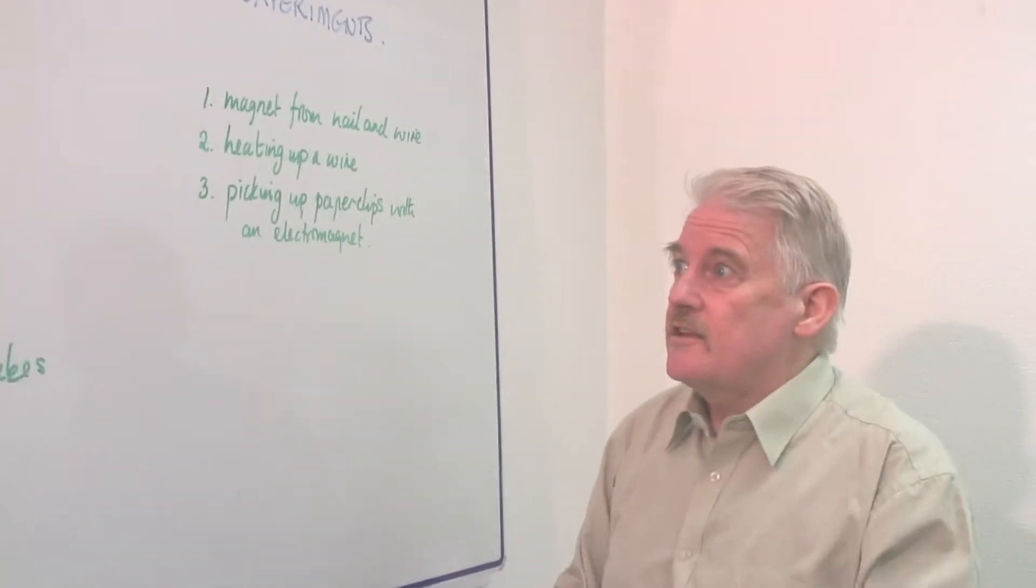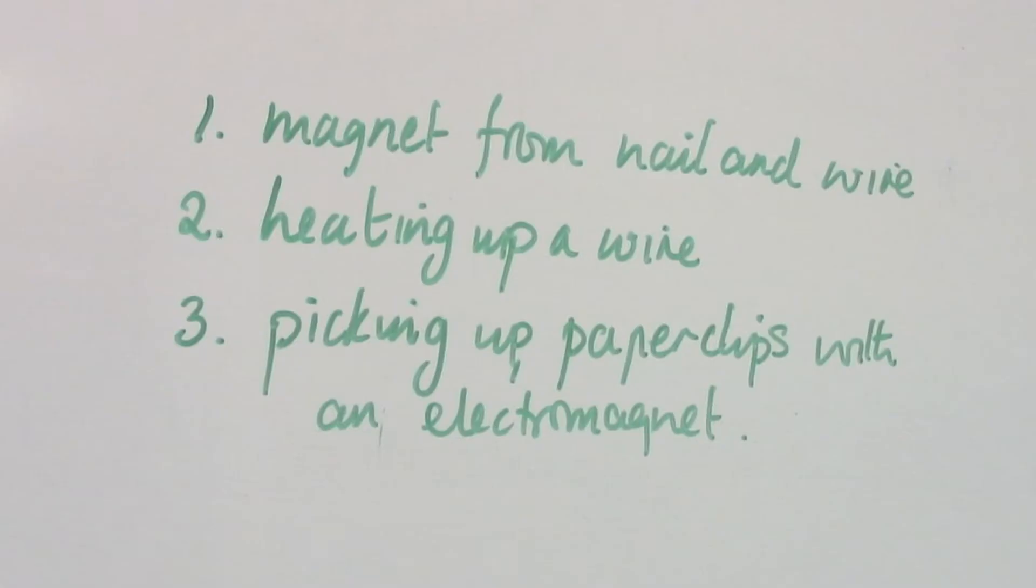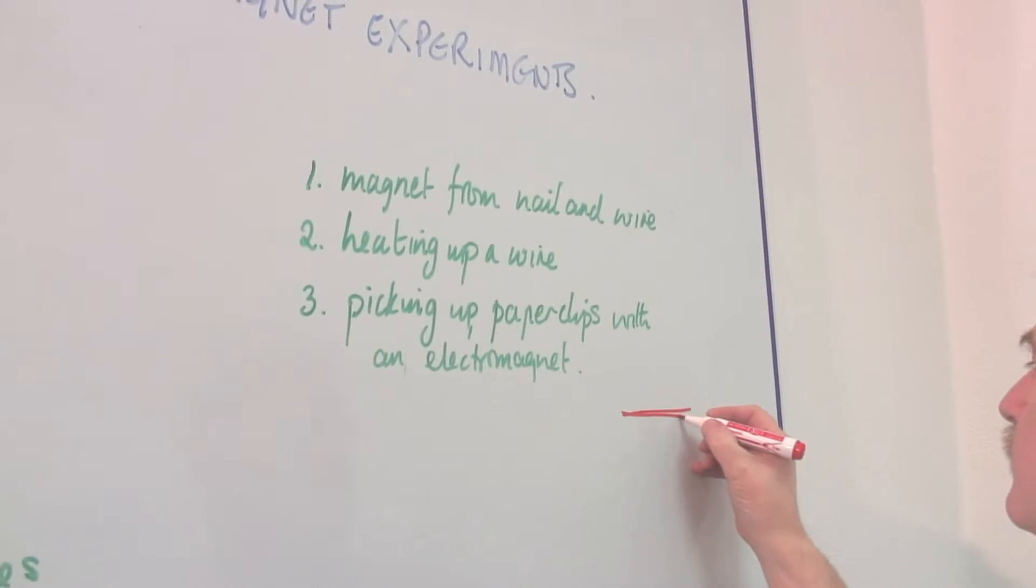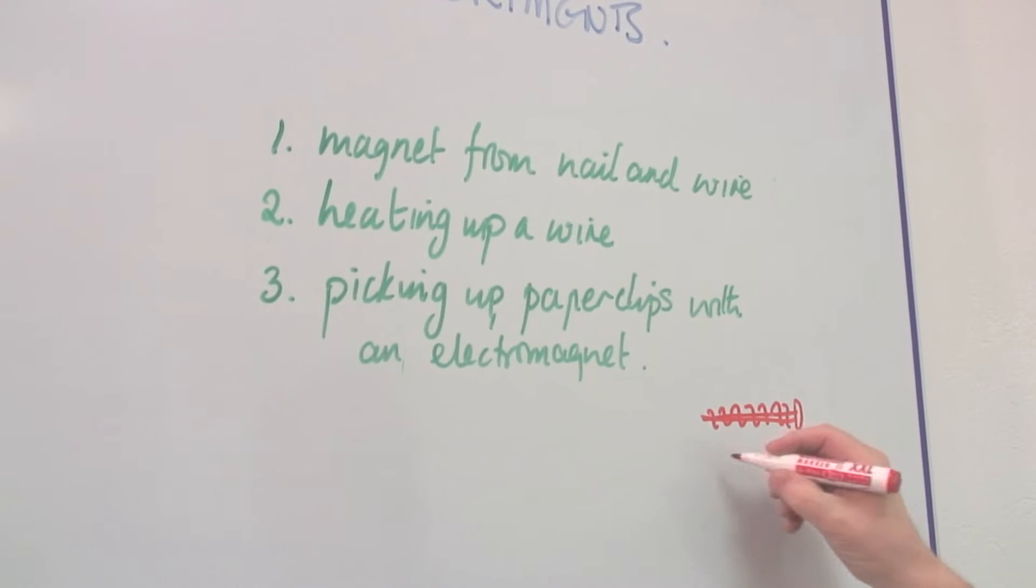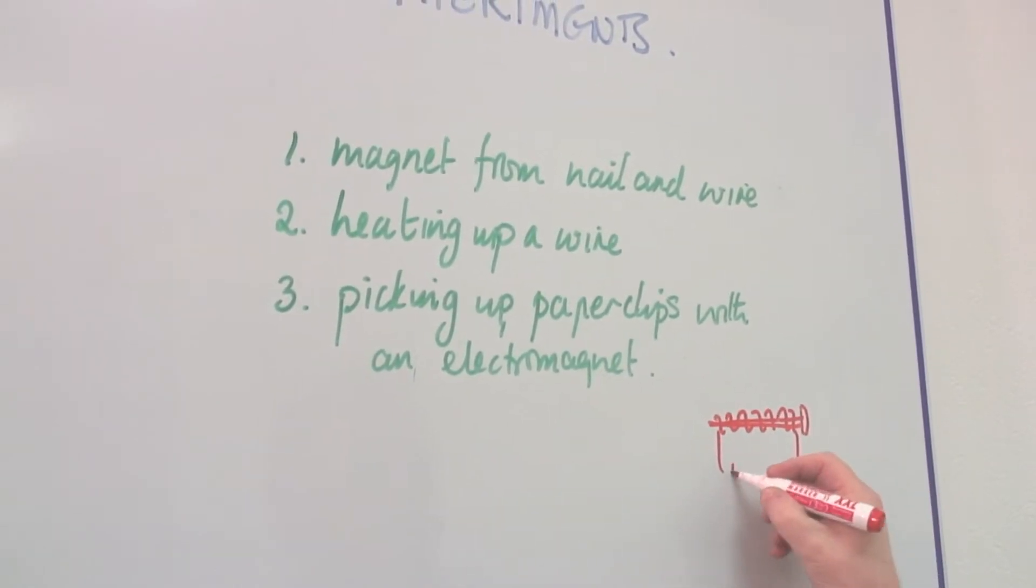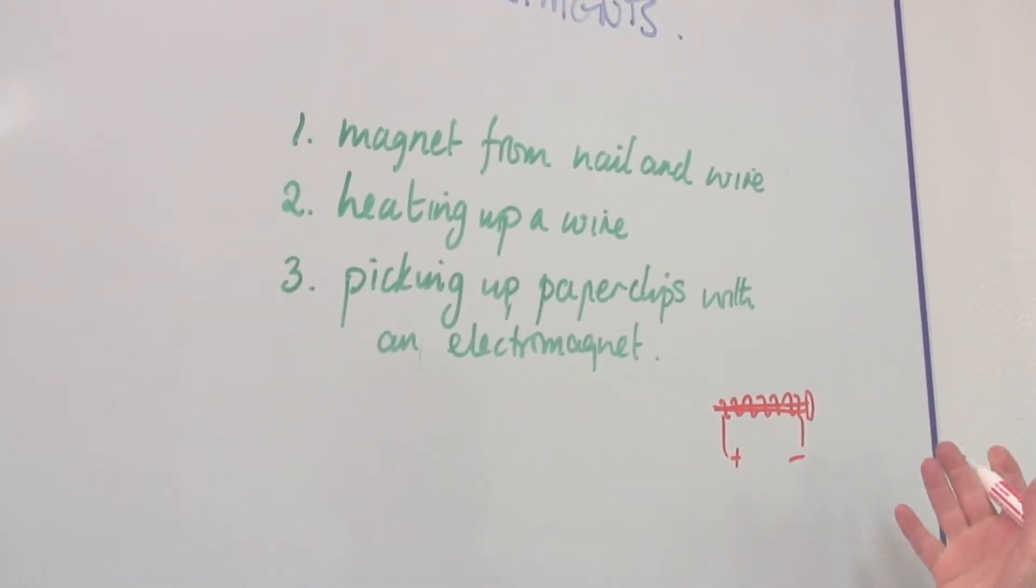And from these things you can make such simple things as a magnet from a nail and a piece of wire. Simply by taking the nail and wrapping the wire around it and then attaching it to a battery. And that makes a simple magnet.